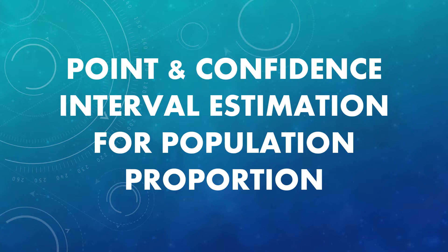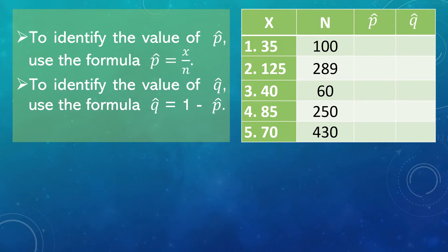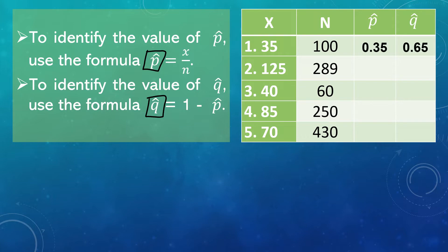Let's start our day with this activity — identifying P-hat and Q-hat. We read this as P-hat, and this as Q-hat. To identify the value of P-hat, we simply divide X by N. So for number 1, we divide 35 by 100, which gives us P-hat equal to 0.35. To find Q-hat, we subtract P-hat from 1, so Q-hat is equal to 0.65.